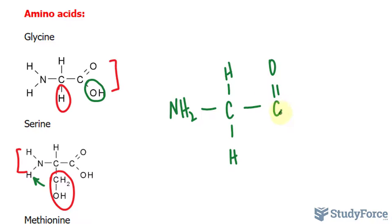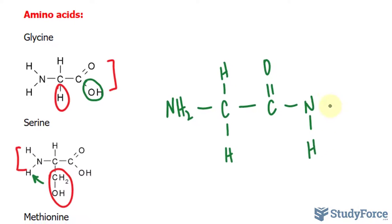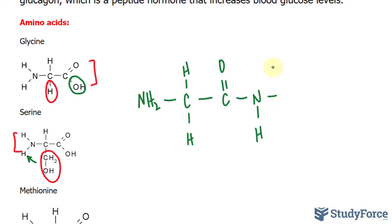So we have the carbon double bonded to oxygen, that's single bonded to the nitrogen of serine, that has its own hydrogen, and then the rest of the serine.